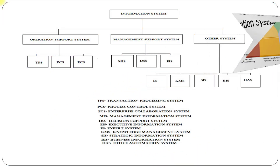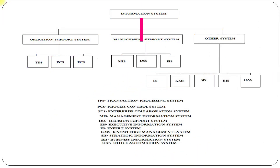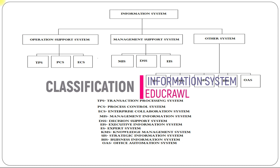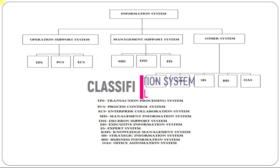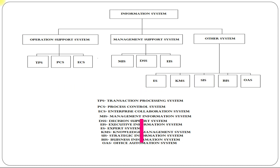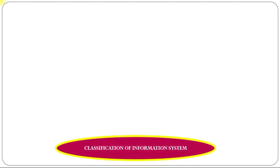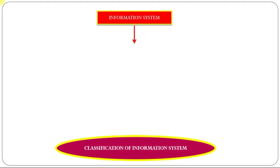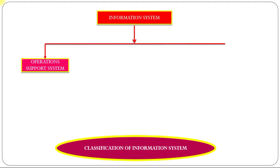Hi everybody. We are going to see about the classification of information systems. Information system is classified into three: operation support system, management support system, and other system.